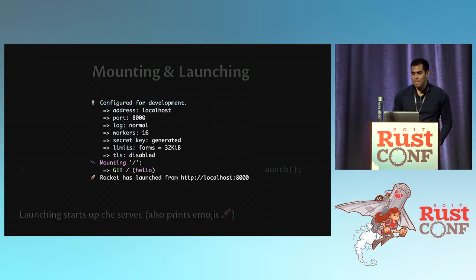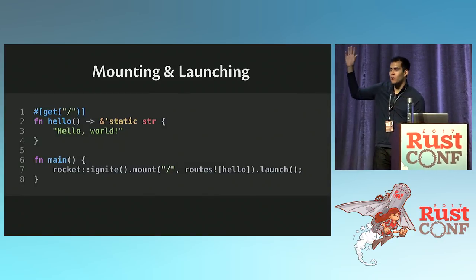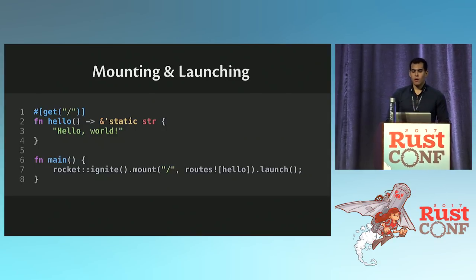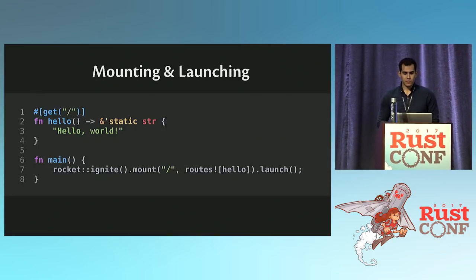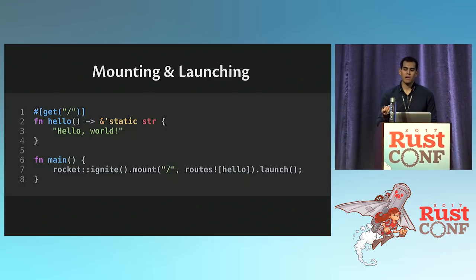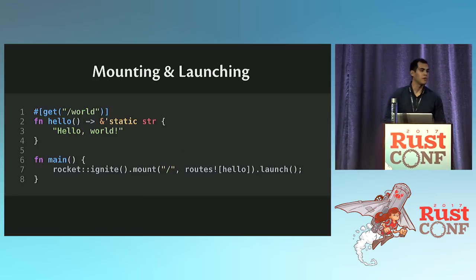So that's what our full application looks like — pretty simple. This is really all you write. Obviously you need to extern crate rocket, but this is really the entire application. We can change the path, so we can change `get("/")` to `get("/world")` and now we'd have to go to `localhost:8000/world`. Or change it to `/sergio`, and then we'd have to go to `localhost:8000/sergio`. But ideally we can do more.